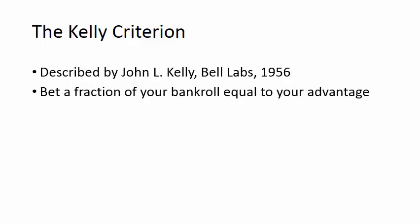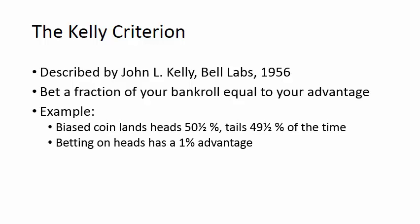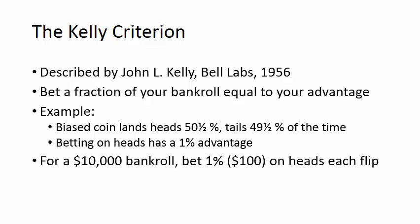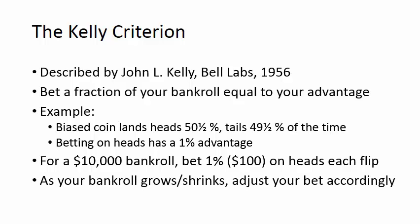The Kelly Criterion says you should bet a fraction of your bankroll equal to your advantage. For example, if you're playing a gambling game against a biased coin that lands heads 50.5% of the time and tails 49.5% of the time, and pays one to one, betting on heads has a 1% advantage. In that situation, if you have a $10,000 bankroll, you should bet 1% of your bankroll — $100 — on heads each flip. As your bankroll grows or shrinks, you adjust your bet accordingly.